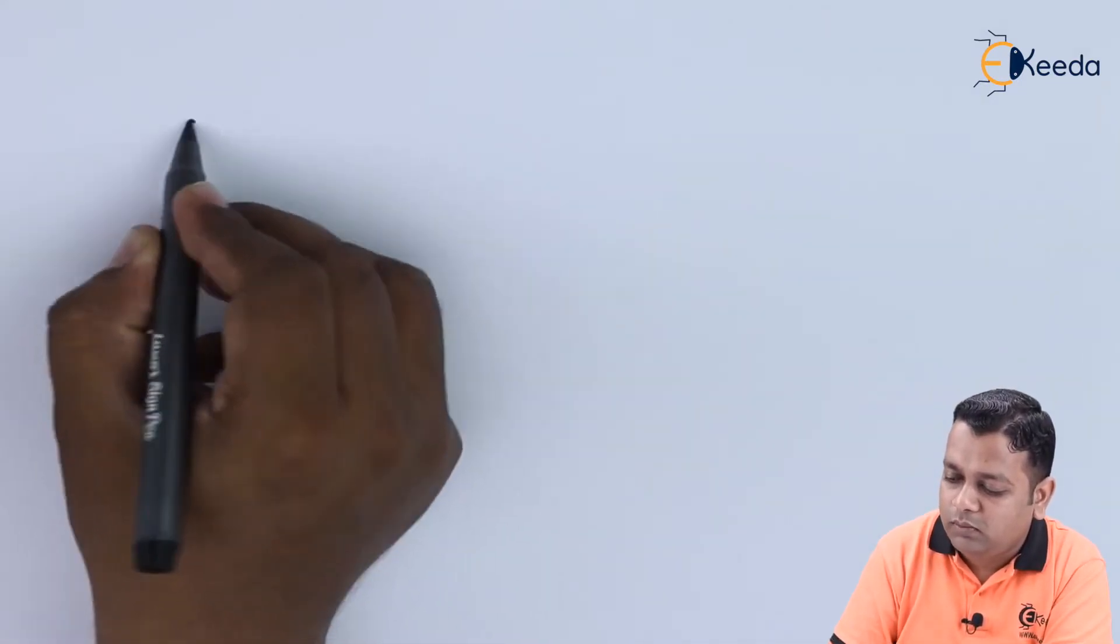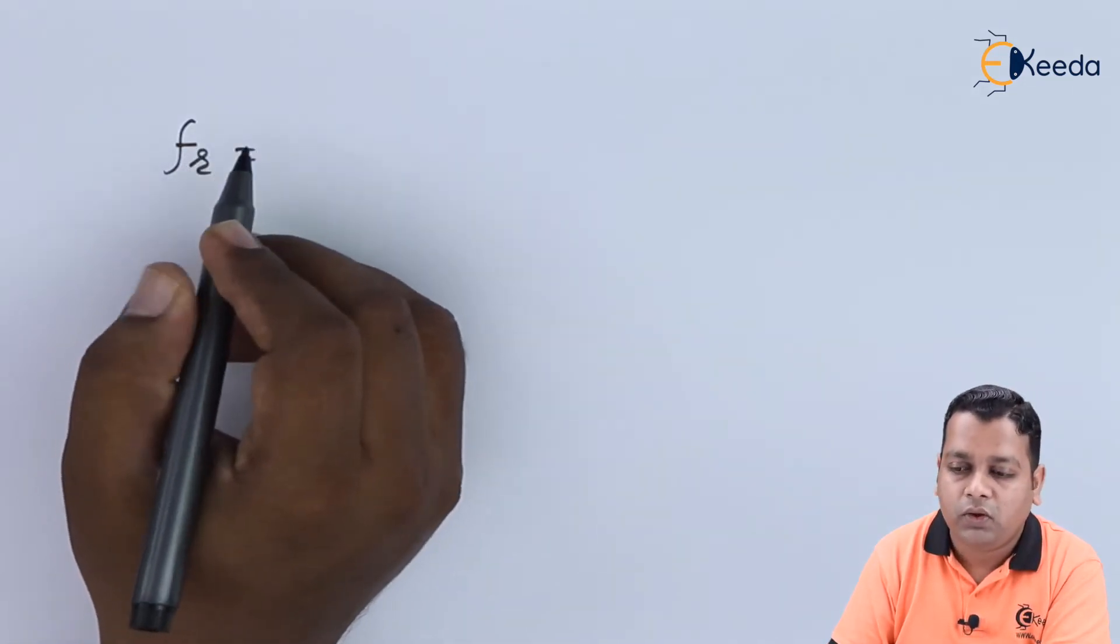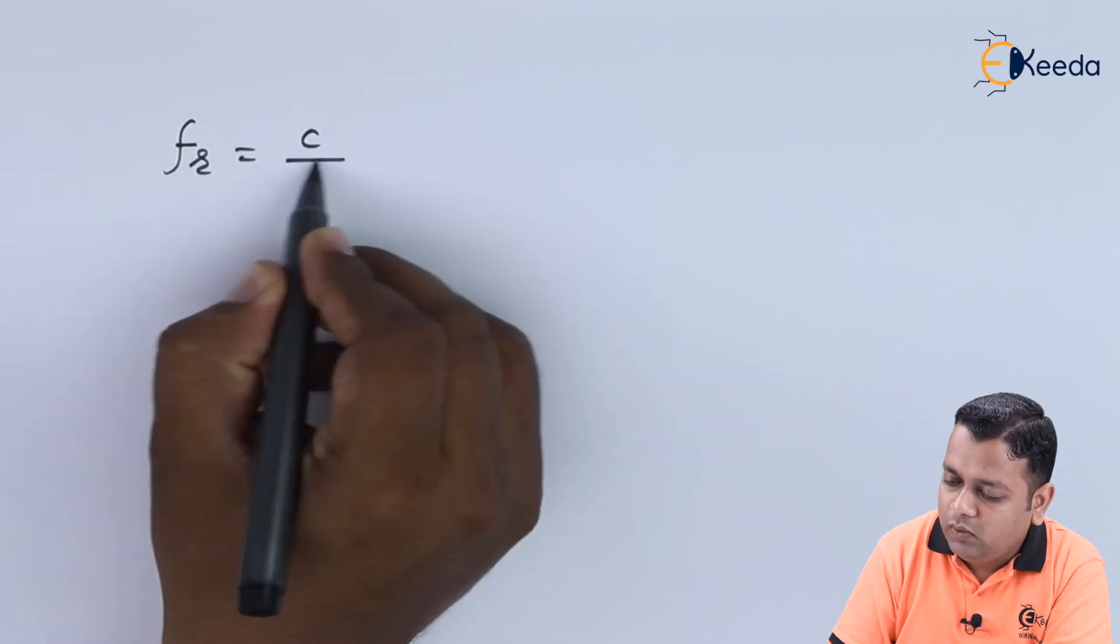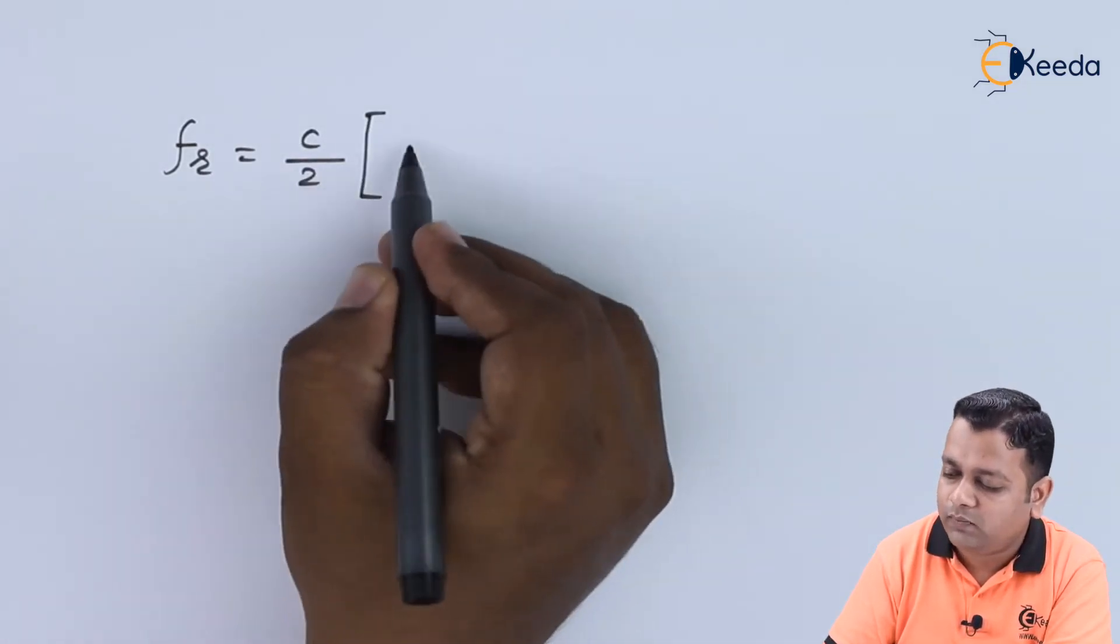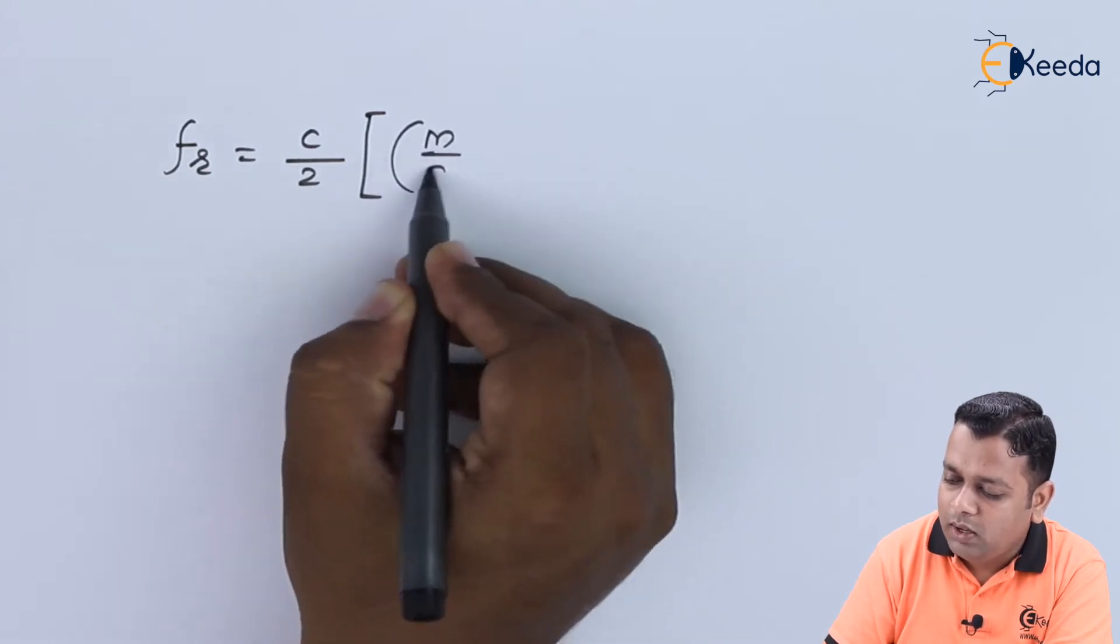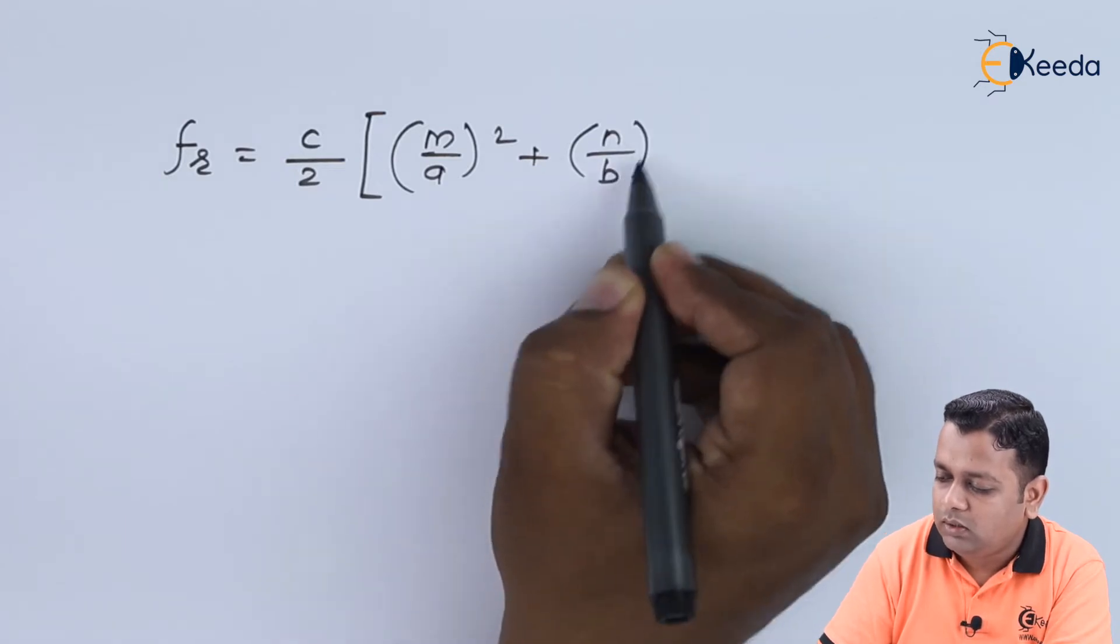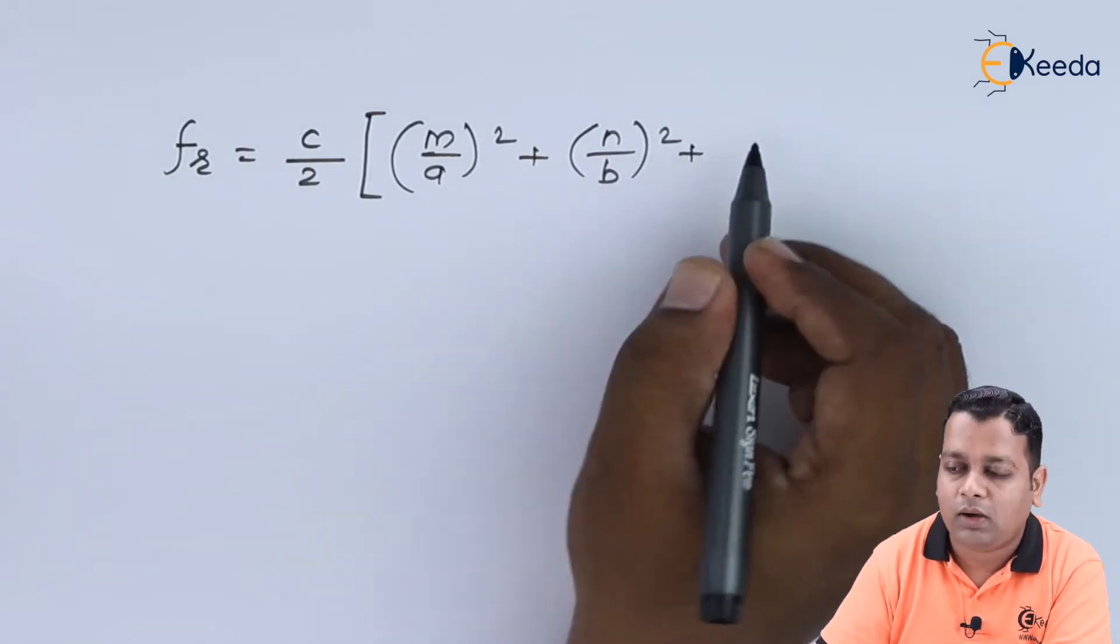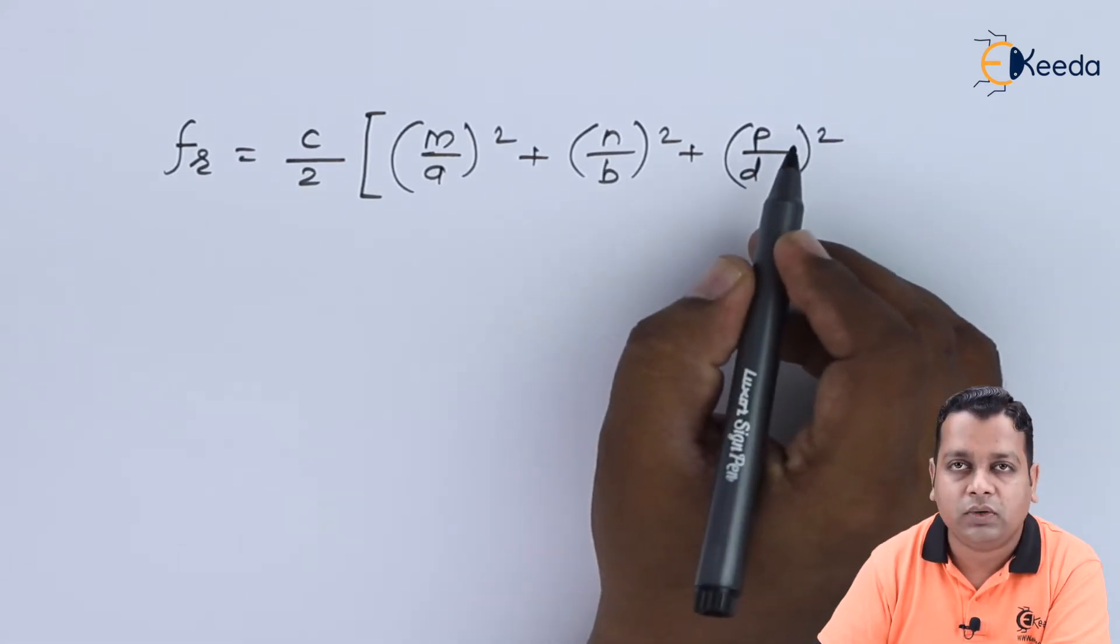The value of resonant frequency can be determined with the formula: FR equals c divided by 2, in multiplication to the square bracket that has m by a squared, added with n by b squared, and finally p by d squared.